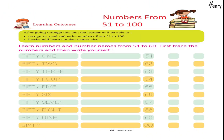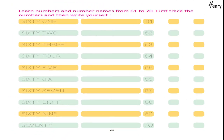Numbers from 51 to 100. Learning outcomes: after going through this unit, the learner will be able to recognize, read, and write numbers from 51 to 100. He/she will learn number names also. Learn numbers and number names from 51 to 60. First trace the numbers and then write yourself.